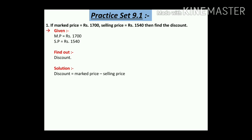Marked price is 1700 minus selling price 1540. Subtracting, we get rupees 160. So the discount is rupees 160. This is how we find the discount using the formula.